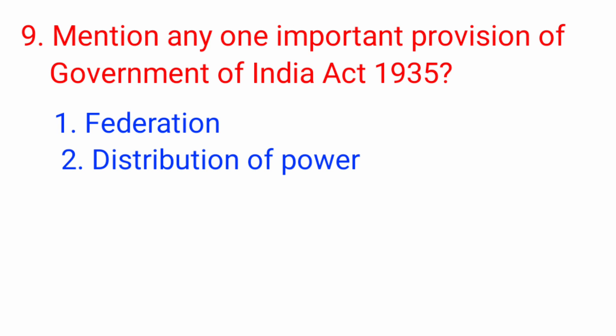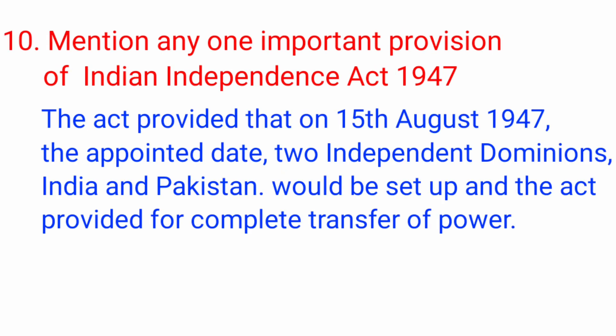Question number 9: Mention any one important provision of Government of India Act 1935. Answer: federation and distribution of power. Question number 10: Mention any one important provision of Indian Independence Act 1947. Answer: the Act provided that on 15th August 1947, the appointed date, two independent dominions — India and Pakistan — would be set up, and the Act provided for complete transfer of power.